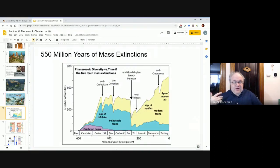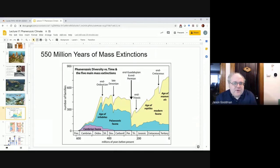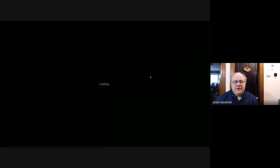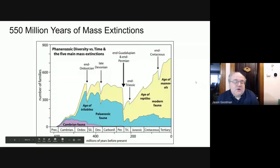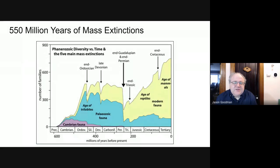You're probably familiar with the extinction of the dinosaurs, but there are a number of mass extinctions that have occurred over the course of Earth's history. The end of the dinosaurs is barely a blip compared to many of the things that have happened in Earth's past.